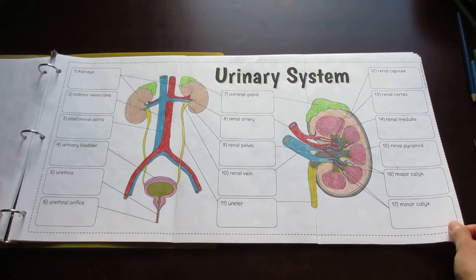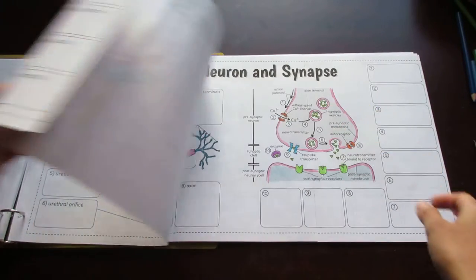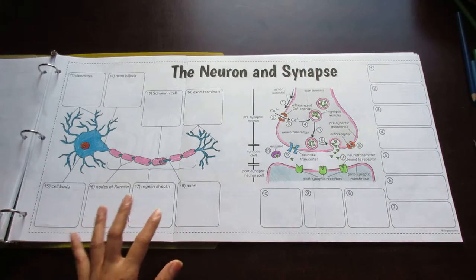Here's the urinary system showing both the overview as well as the close-up of the kidney. Here's the neuron and synapse.